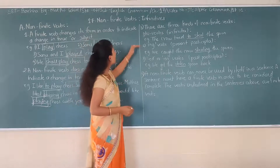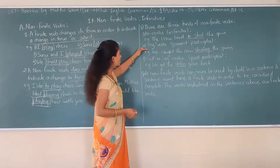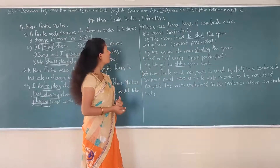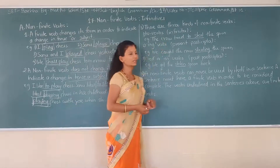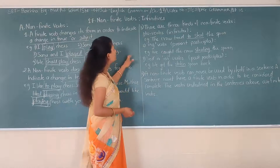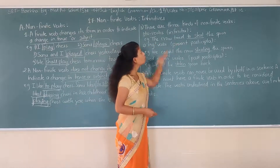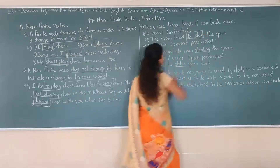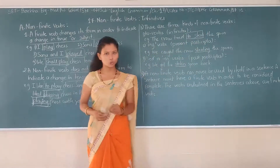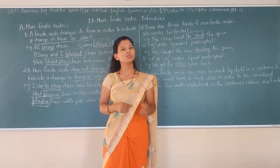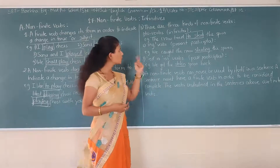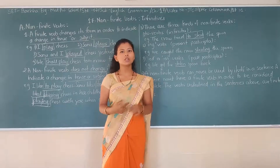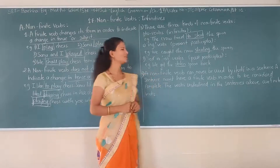The three types are: to-verbs, ing-verbs, and ed or en verbs. Now, the first type — to-verbs — is the infinitive. In to-verbs, you have to use 'to' before the verb. For example: to steal, to play, to listen, to read. All of these are to-verbs.